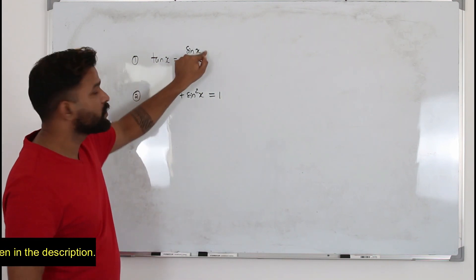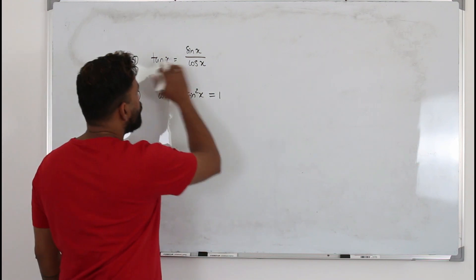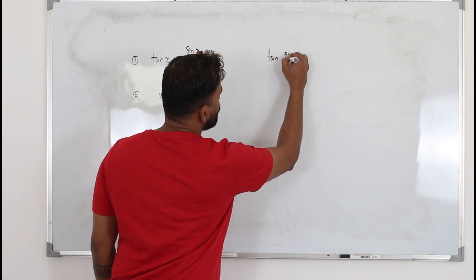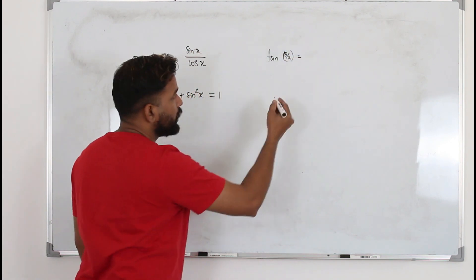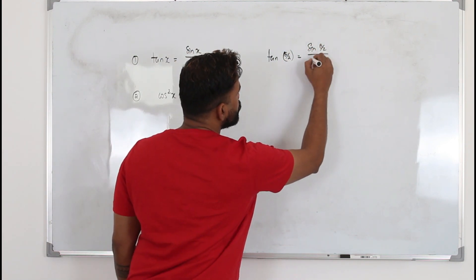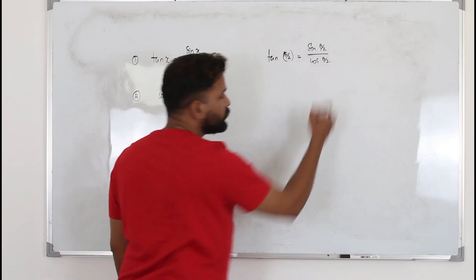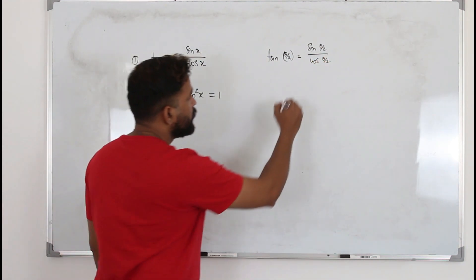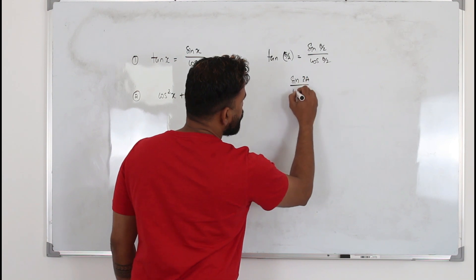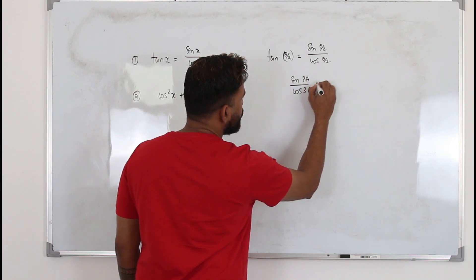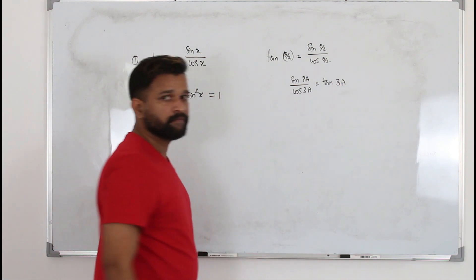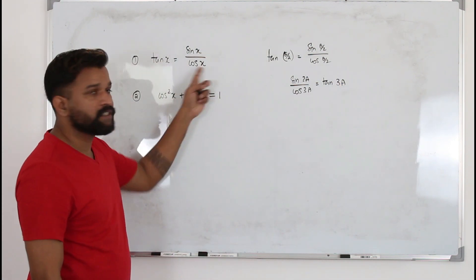In the place of x you can have anything. For example, if you have tan(θ/2), you can replace it with sin(θ/2) over cos(θ/2). Or if you have sin 3a over cos 3a, that is the same as tan 3a. So the x should be the same on both sides.